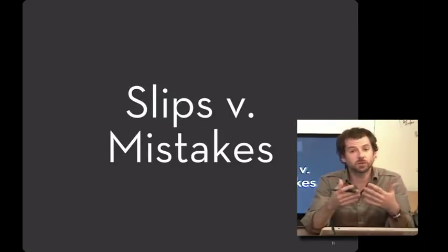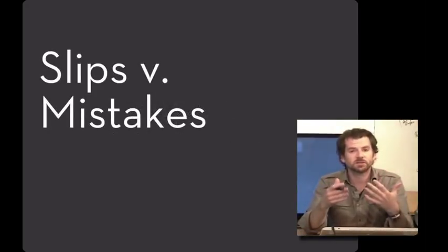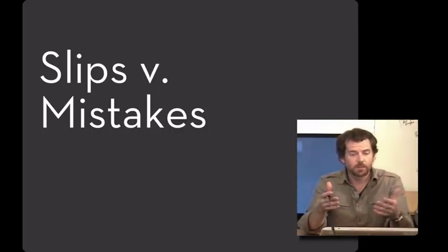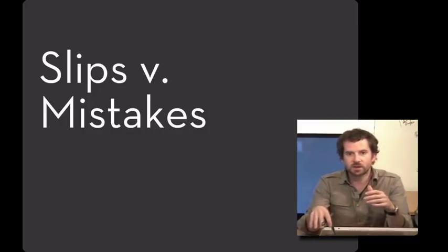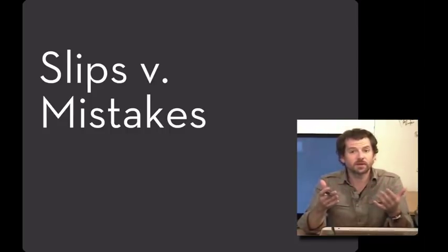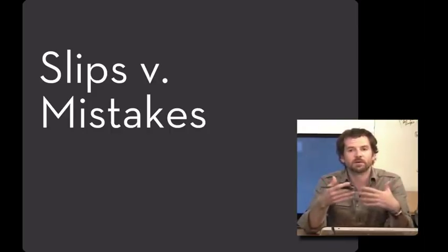There are two important categories of errors based on a user's mental model. The first category is a slip. With a slip, you have the right model of how a system works, but you accidentally do the wrong thing — for example, reaching for one button and pressing another by a motor error. On the other hand, a mistake is when you do what you intend to do, but you have the wrong model of what you ought to do. For example, if you're driving and you believe you should take a certain highway exit, take it exactly as intended, but were wrong in that belief — that's a mistake.